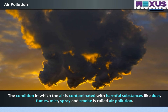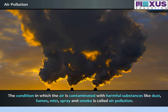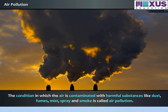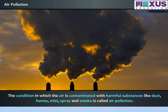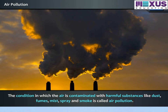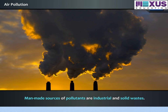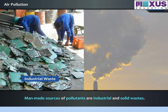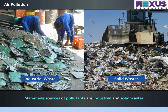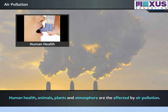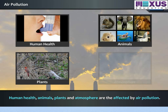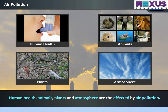The condition in which the air is contaminated with harmful substances like dust, fumes, mist, spray, and smoke is called air pollution. Smoke emitted by industries contains major air pollutants like carbon monoxide and sulphur dioxide. Man-made sources of pollutants are industrial and solid wastes. Human health, animals, plants, and atmosphere are affected by air pollution.